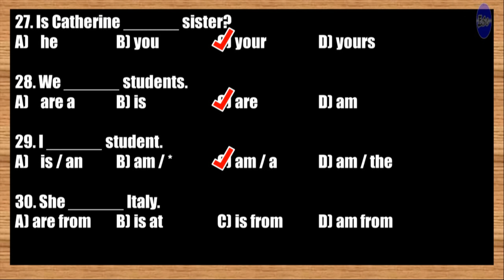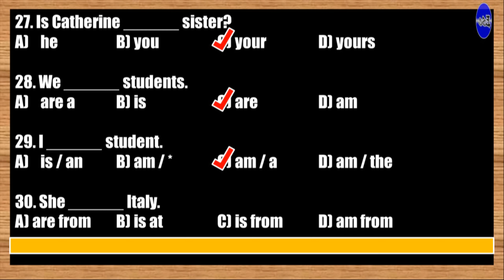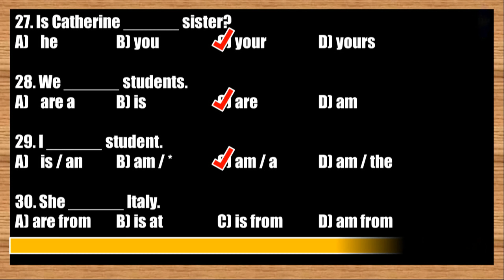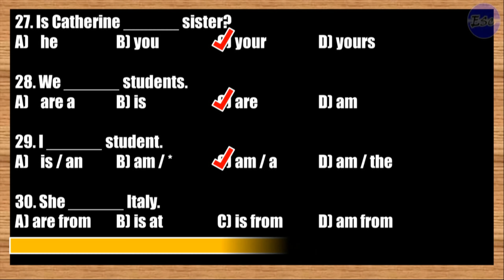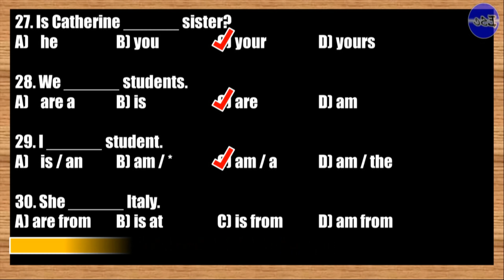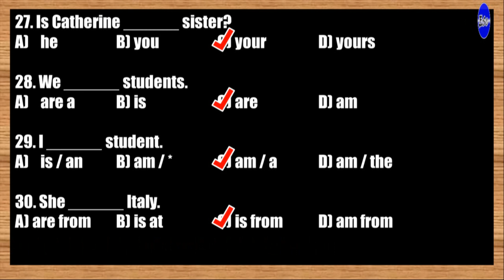Number thirty: She blank Italy. A: are from; B: is at; C: is from; D: am from. The best answer is option C. She is from Italy.